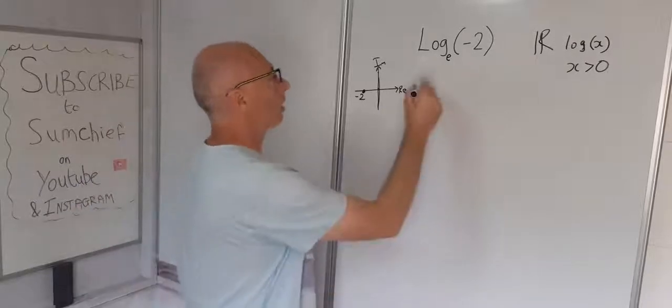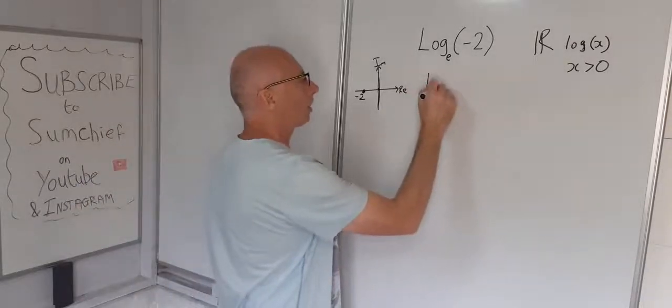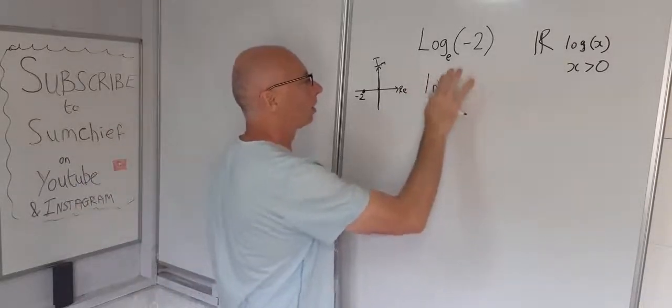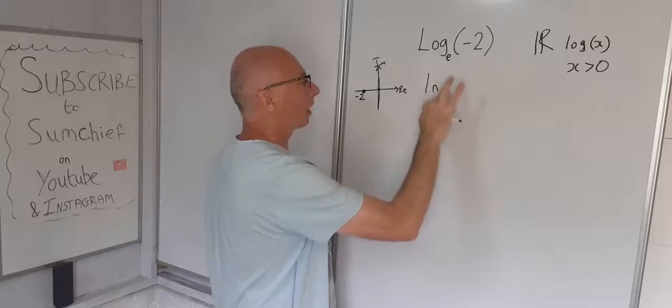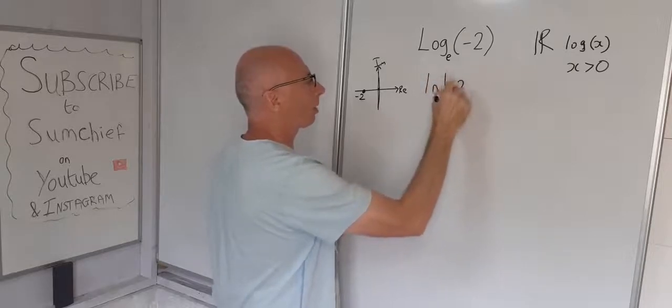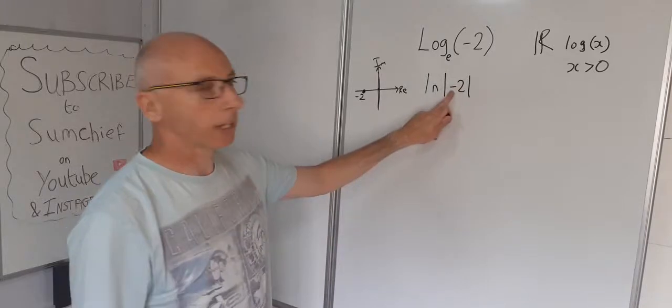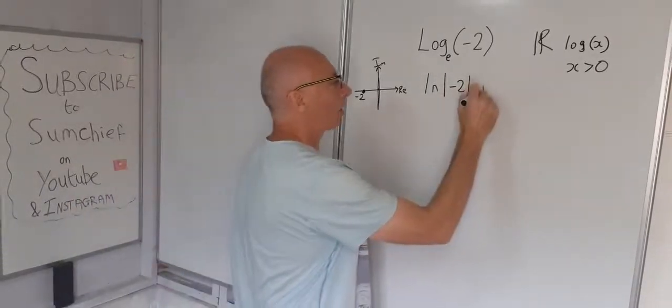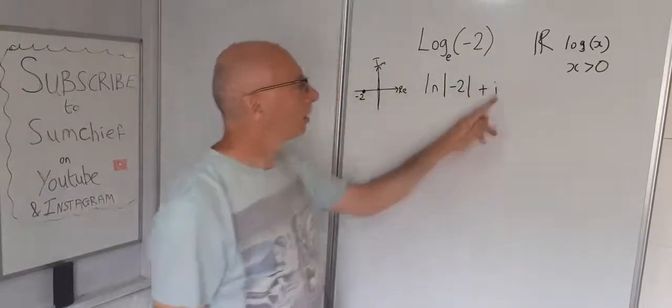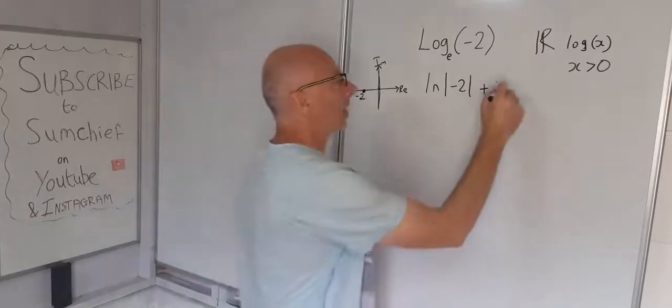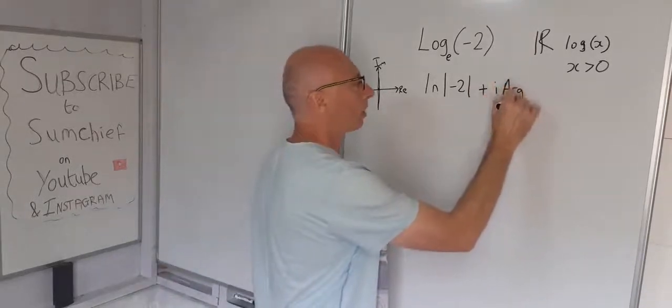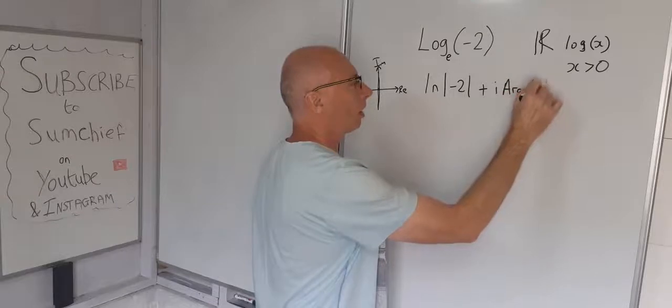So the formula we use for this: we take natural log, let's put natural log here now, and then absolute value minus 2. That's how we take care of the minus. And then we add on that i, the imaginary value, and then the principal argument of minus 2.